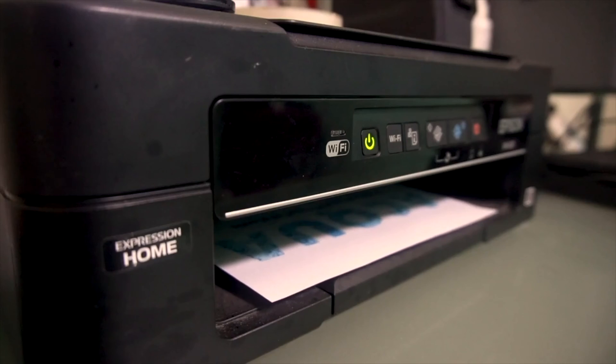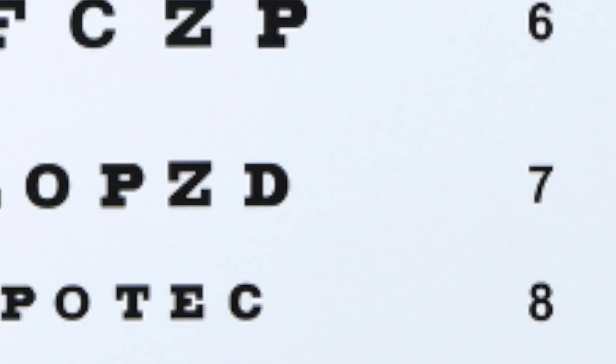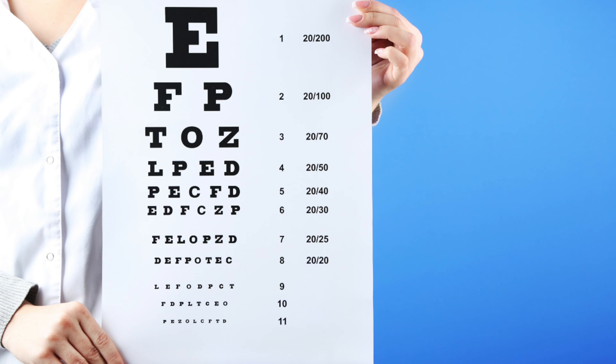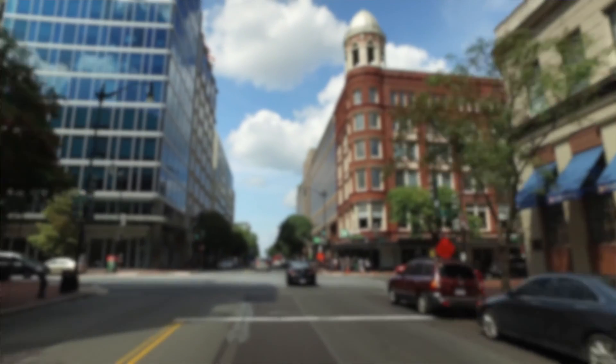If you wanted to test this for yourself at home, you could draw or print some random letters and measure them up to be about 8.7mm squared. Place those letters 20 feet away and try to read them with one eye at a time. You'll find that it isn't an easy task.